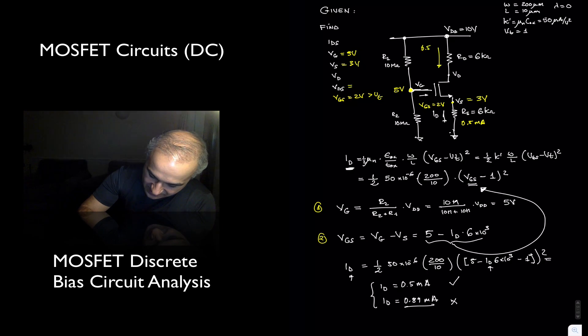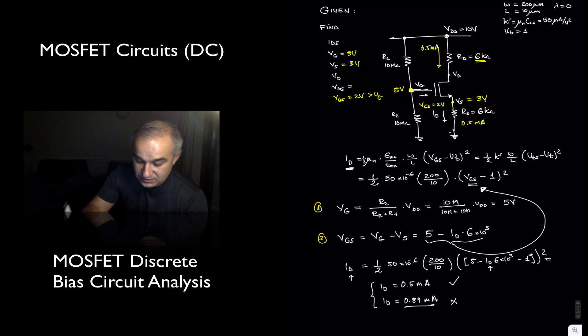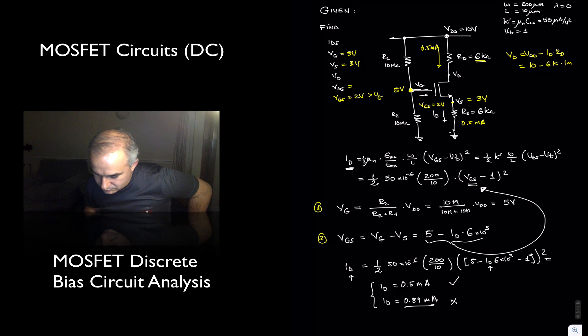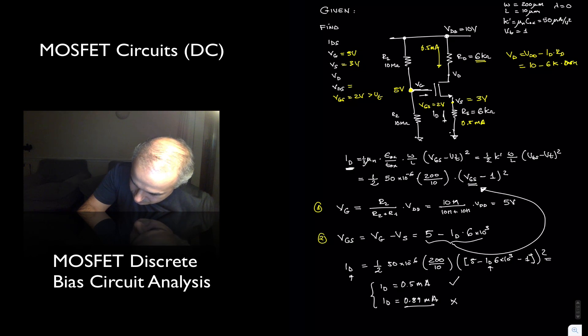If this is 0.5 milliamps, the voltage drop around 6k is 3 volts. So we have that the voltage at the drain is equal to Vdd minus Id times Rd, or 10 minus 6k times 0.5 milliamps, which is 10 minus 3 volts equals 7 volts.